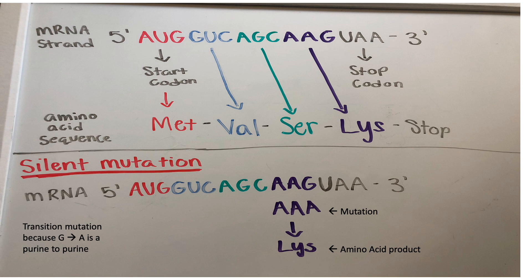Point mutations are mutations only affecting one or a few nucleotides in a gene sequence. First, we have a silent mutation. A silent mutation is when a nucleotide changes and the amino acid still remains the same. Here, the G in AAG is mutated to an A, but AAA still codes for the LYS amino acid, just like the coding strand. This is a transition mutation since the base is changing from G to A.